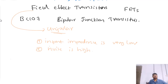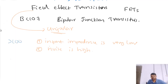And for FET, the input impedance is high. If you consider a typical FET, the input impedance of an FET can be greater than 100 mega ohm. Also, FETs are less noisy. So these are the two advantages of a FET.